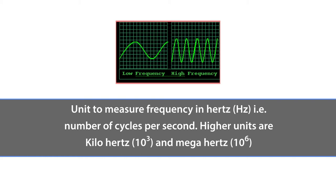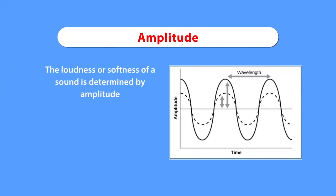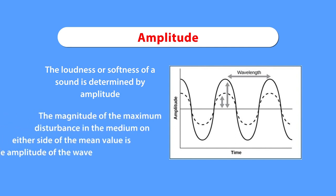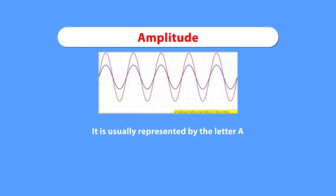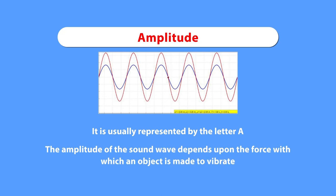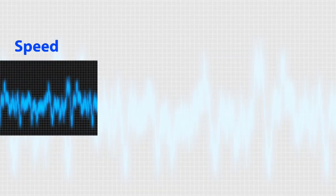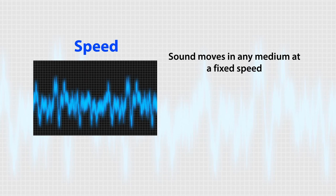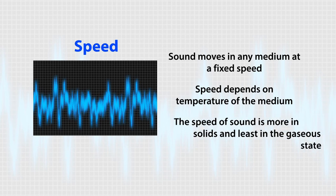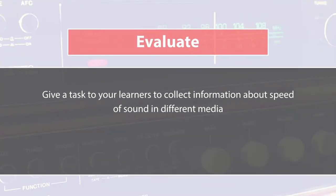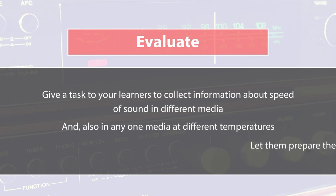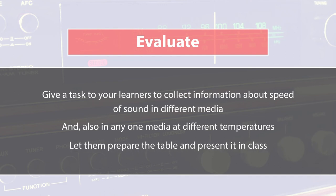So sound moves with a certain frequency. Then comes amplitude — the loudness or softness of a sound is determined by its amplitude. The magnitude of the maximum disturbance in the medium on either side of the mean value is called the amplitude of the wave, usually represented by the letter A. As shown in the animation, the amplitude can be seen increasing and decreasing. The amplitude of a sound wave depends on the force with which an object is made to vibrate. Then comes speed: sound moves in any medium at a fixed speed, and that speed depends on the temperature of the medium. The speed of sound is greatest in solids and least in gases.